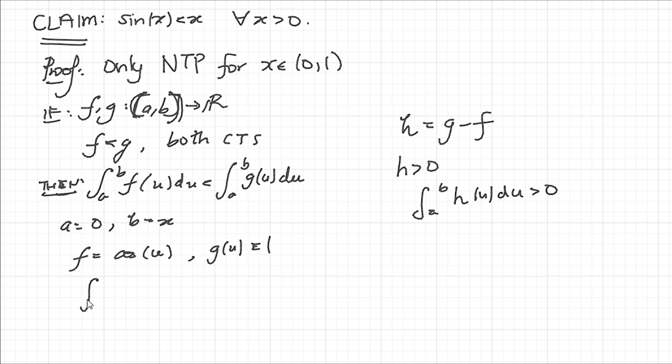So therefore we have that the integral from 0 to x of cos(u) du must be less than the integral from 0 to x of 1 du.